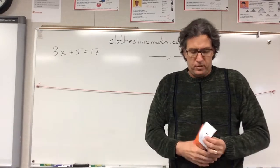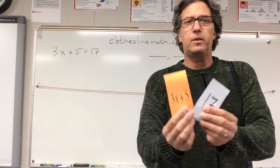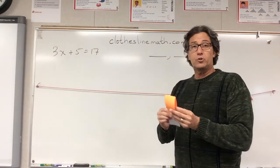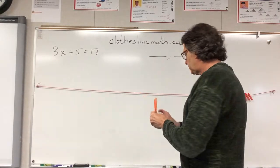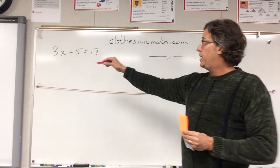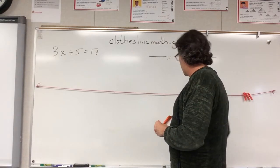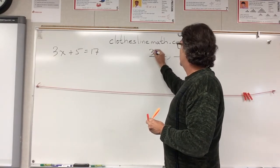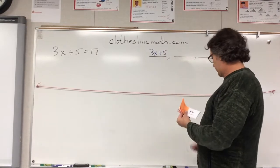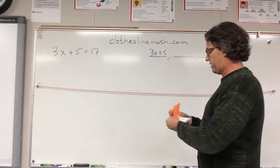We set out to solve this equation, 3x plus 5 equals 17. So the students are drawing on their whiteboards a number line, and then we ask them to place, according to what I'm going to do here, 3x plus 5, and then we're going to set it equal to 17.